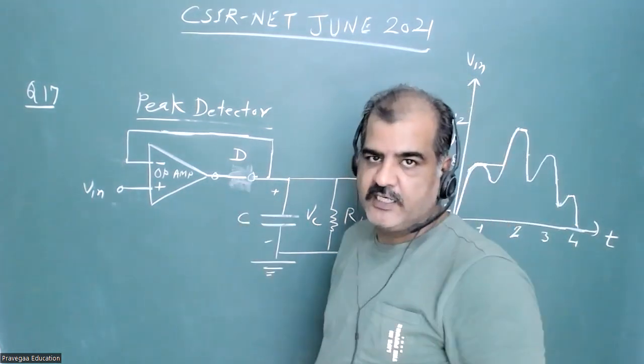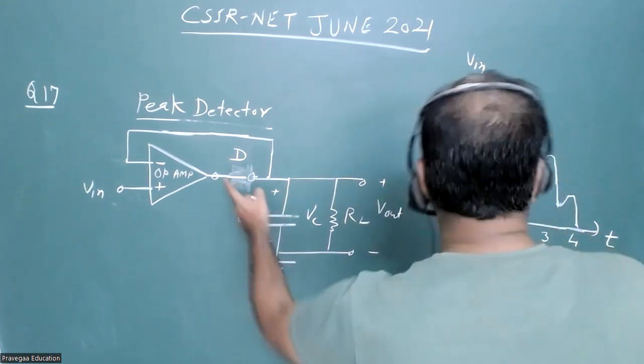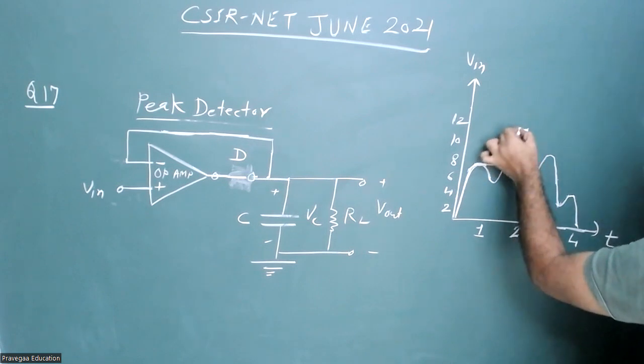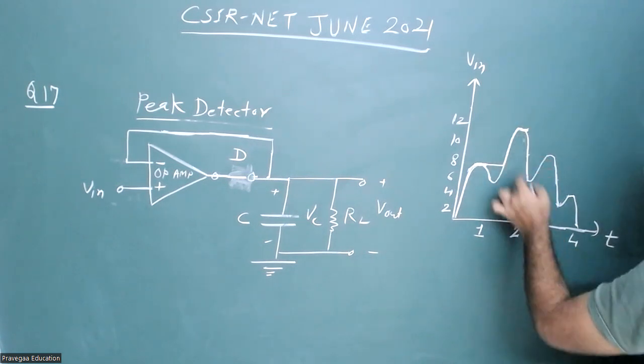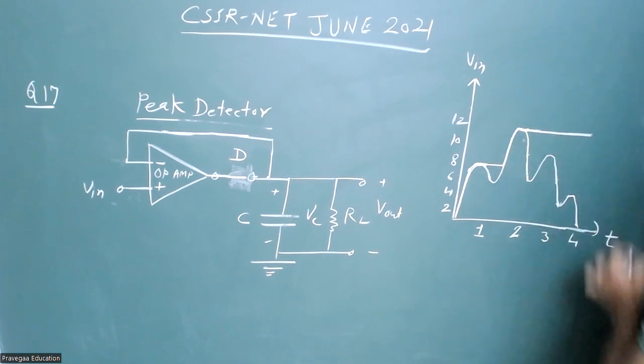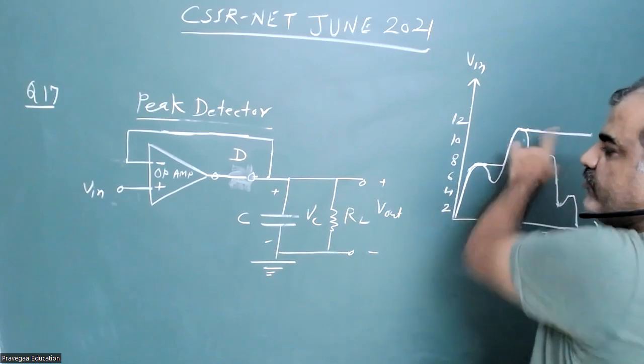Now if you further decrease the input, again your diode will become non-conducting, will be in reverse bias, and your output will maintain up to the peak value of the given input. So now as the peak value of the input is decreasing, our output will become constant until you don't apply voltage higher than this output voltage.